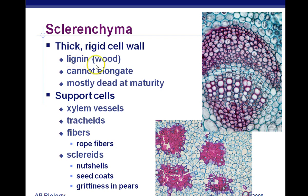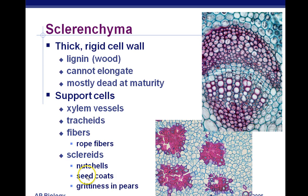Sclerenchyma contains lignin, cannot elongate, and is dead at maturity. Xylem is made of sclerenchyma, so xylem is not alive — they're dead cells in the shape of tubes. One type of xylem cell is called tracheids, which we'll discuss more later. Fibers of sclerenchyma are used for rope — like manila rope, which is all sclerenchyma. Nutshells and seed coats — anything gritty and woody — is all sclerenchyma. A peach pit, for example, is all sclerenchyma.